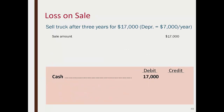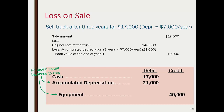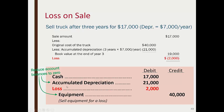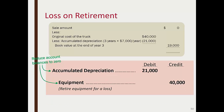If instead we sell the truck for $17,000 — less than the $19,000 book value — we record a loss. Journal entry: debit Cash $17,000, debit Accumulated Depreciation $21,000, debit Loss on Sale of Equipment $2,000, credit Equipment $40,000. A loss acts like an expense — it's a debit — and serves to decrease owner's equity.